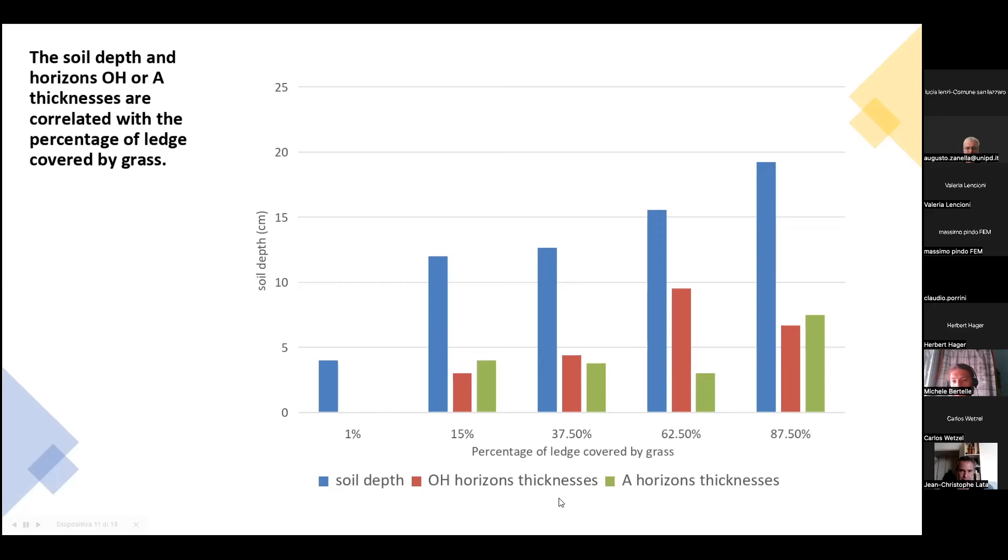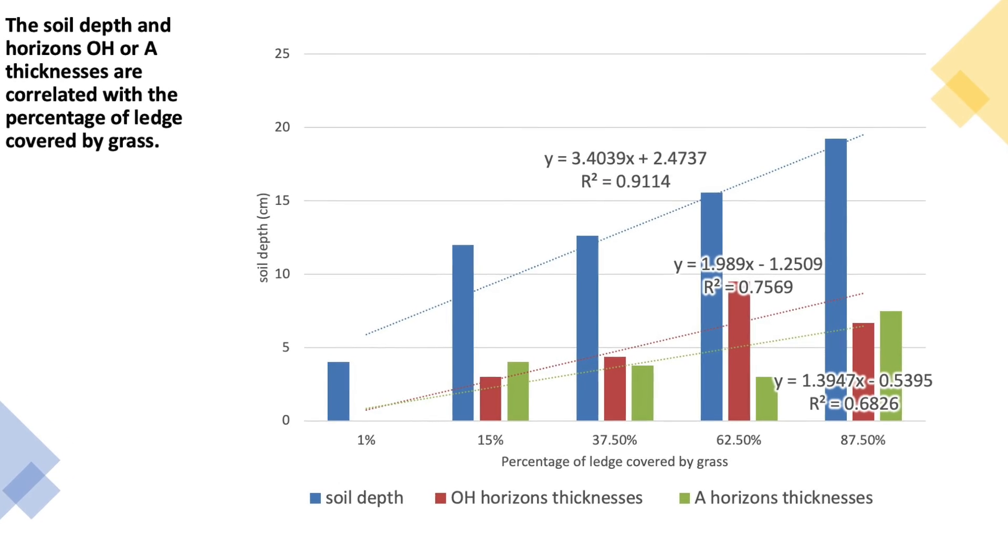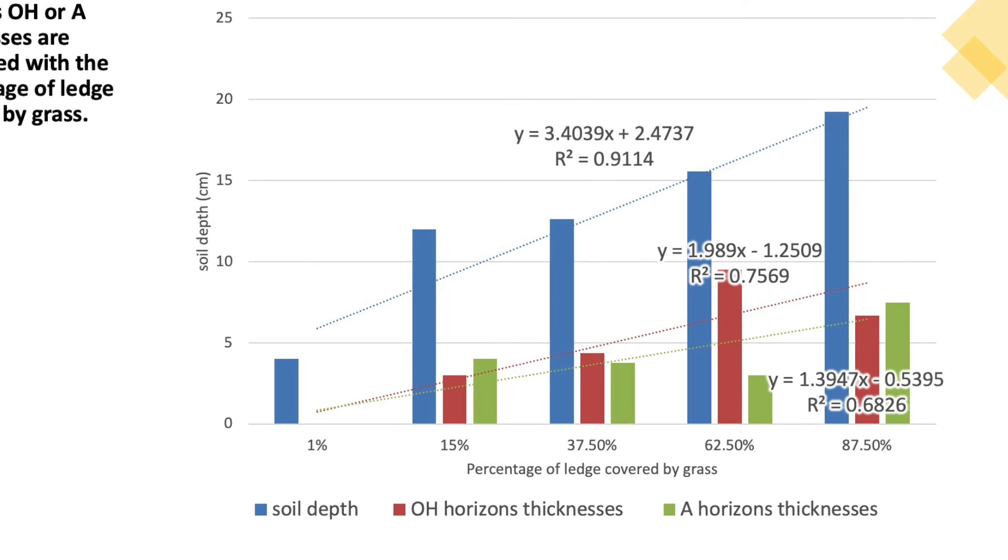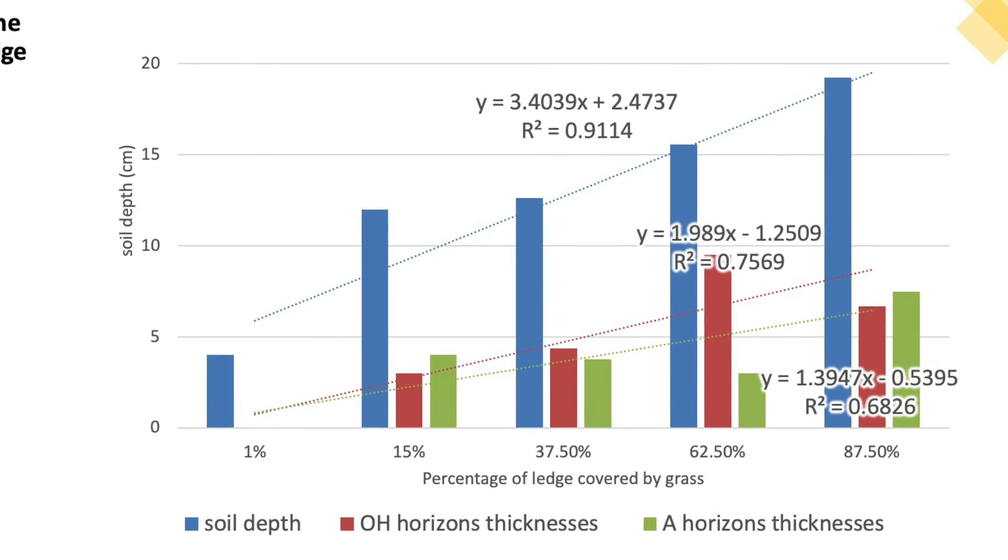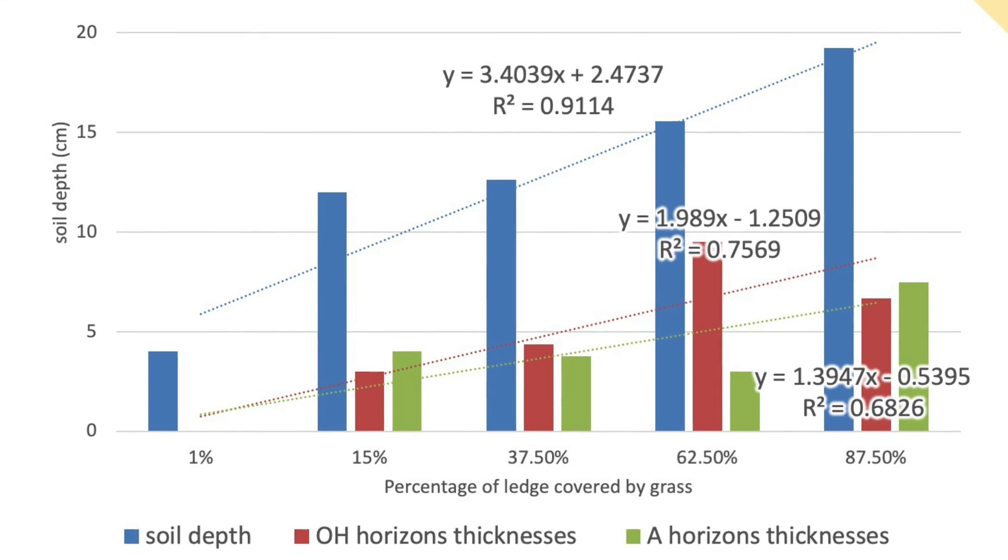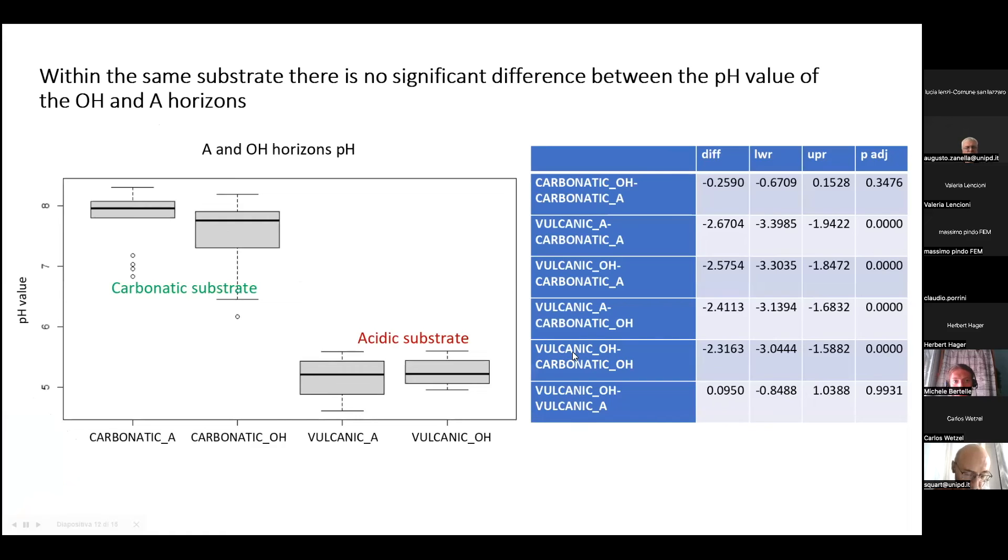For the last analysis we did, it's about the pH value of the two different substrates we analyzed. As you can see, there is a big difference between acidic substrate and carbonatic substrate.